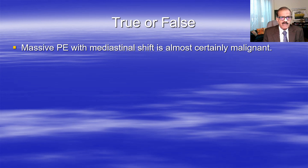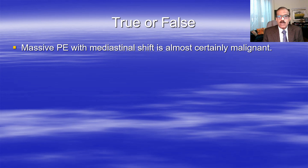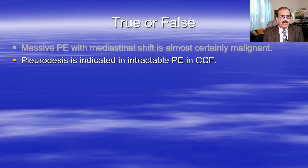Massive pleural effusion with mediastinal shift is almost certainly malignant - true. Tuberculosis pleural effusions do not become massive, only moderate. Similarly, bilateral pleural effusions are never massive as that would not be compatible with life. So unilateral massive pleural effusion is mostly due to malignancy.